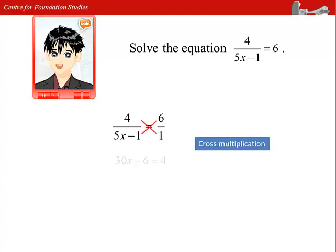That will give us 30x minus 6 equals to 4. Collecting the unknown on the left hand side, we get 30x equals to 10. Simplifying, we get x equals to 1 third.